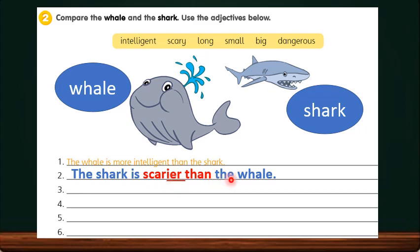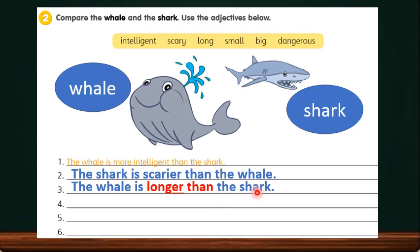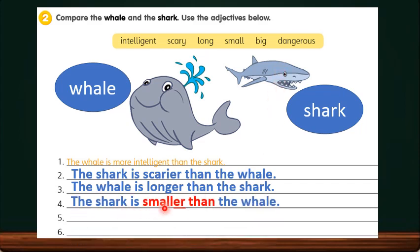The shark is scarier than the whale. Don't forget you have to write than behind the comparative adjective because we are comparing these two animals. Next, we will use long to form the comparative adjective — which animal is longer? The whale is longer than the shark. Don't forget: long becomes longer in comparative form. Then number 4: small — small will become smaller. Which animal is smaller? The shark is smaller than the whale.